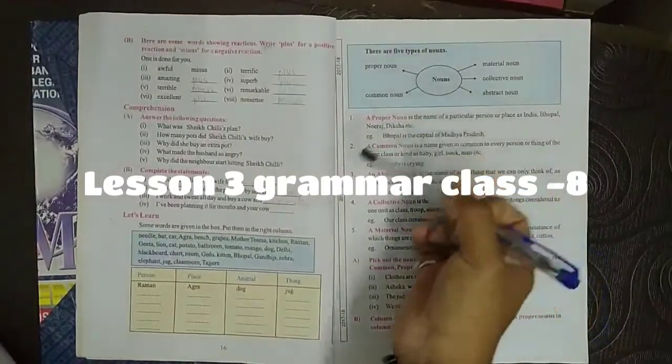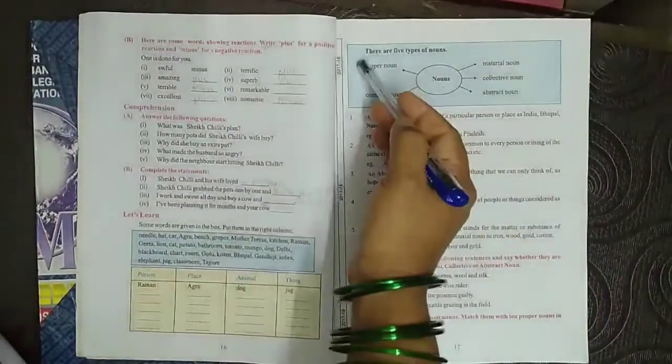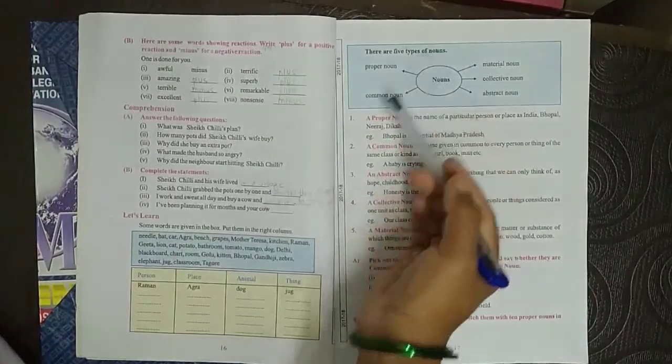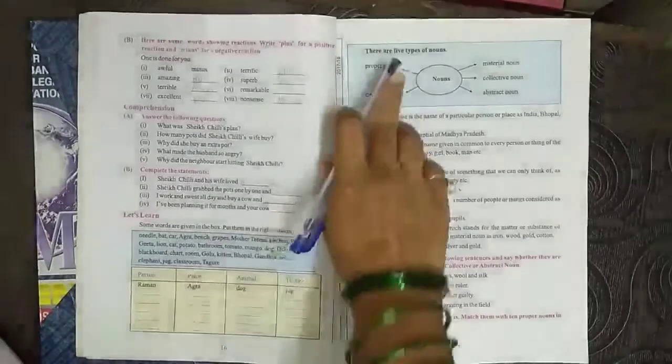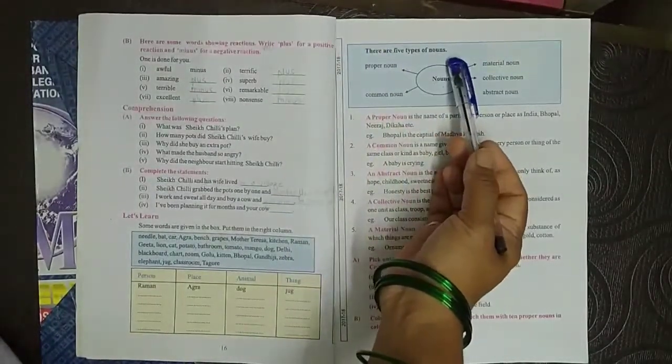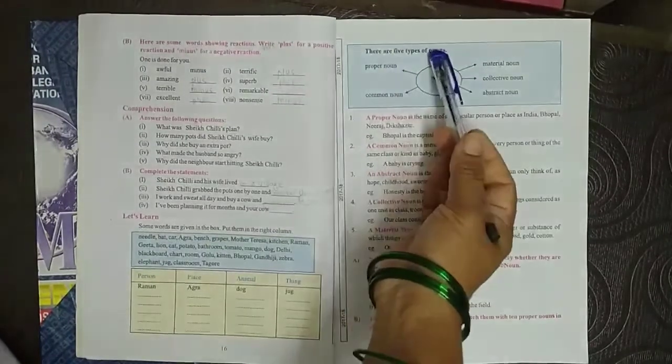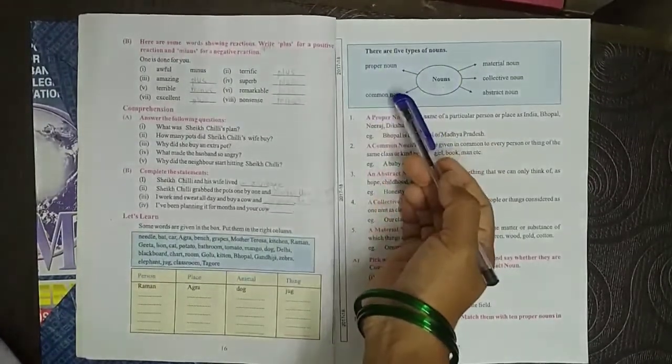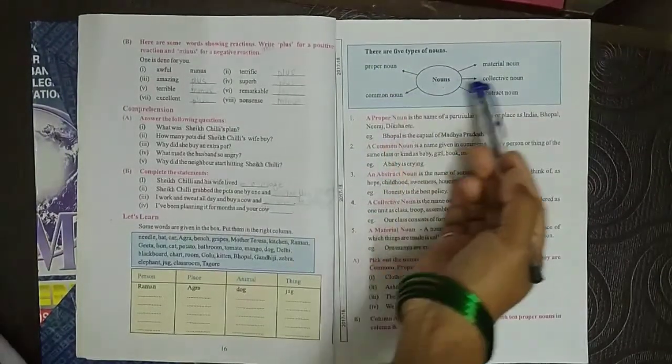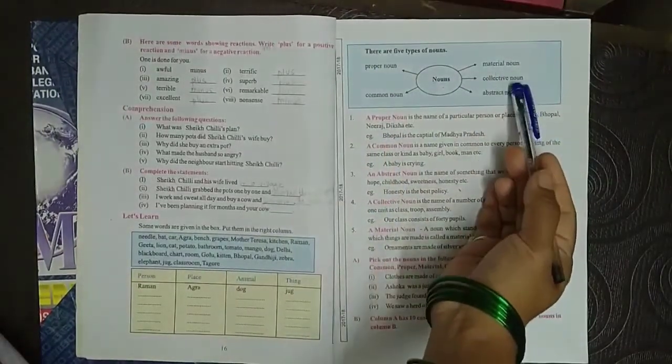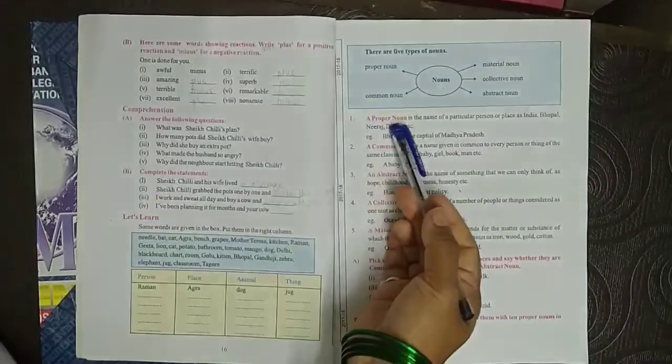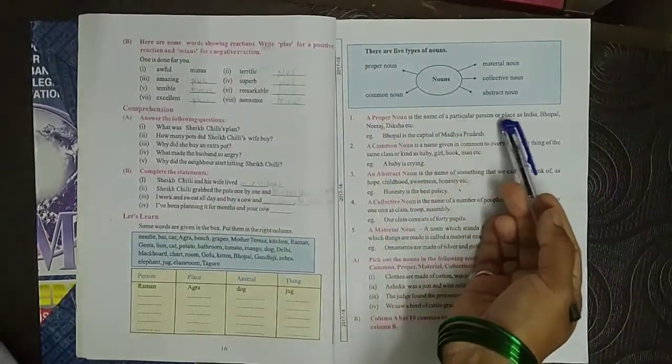Hello students, now today we start the grammar section of our book. First, nouns. There are five types of nouns. I have already told you and explained what are the five types of noun: proper noun, common noun, material noun, collective noun, and abstract noun.